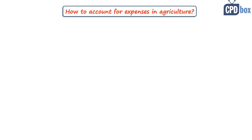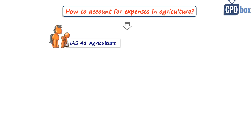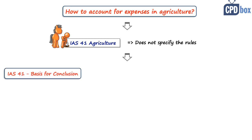The trouble is that IAS 41 Agriculture is silent on this topic — there are no exact rules on how to present these costs. I read the basis for conclusions related to IAS 41, which is a document explaining why the standard creators made the rules as they are, and it says it is not necessary to make rules about subsequent expenditures in agricultural activities.